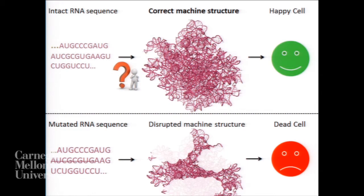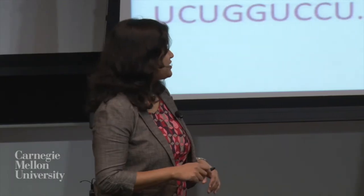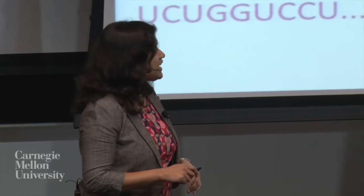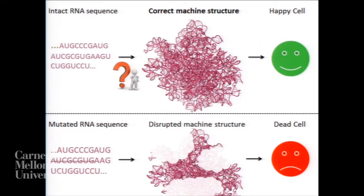To answer this, I deliberately introduced mutations — or spelling errors — in this sequence. Then, using state-of-the-art technology currently available, I asked whether this precise structure can form, whether this machine can actually assemble, and whether the cells can actually live. What I found when I introduced these spelling errors was that the precise structure cannot be formed, the machine cannot assemble properly and function properly, and that the cells ultimately die.